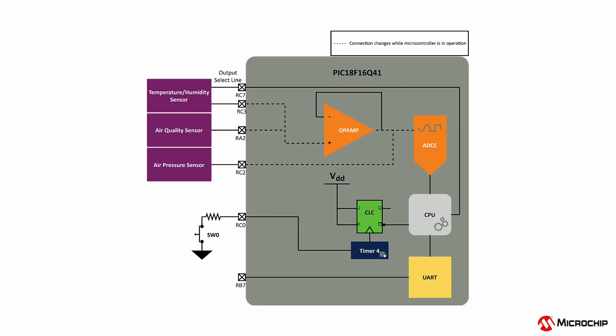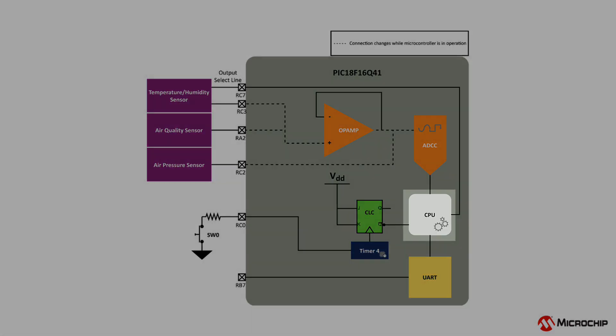Once the desired sensor is selected and the output is sent from the ADCC, the CPU calculates the relevant measurement from the ADCC raw value.